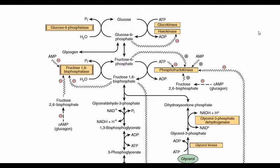There are 3 major sources for gluconeogenesis. Number 1: glycerol. Number 2: lactate. Number 3: amino acids — specifically propionate and alanine, with alanine being the major amino acid source.